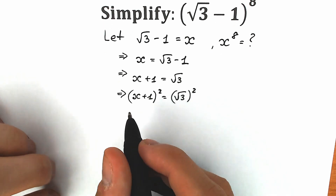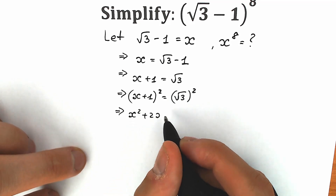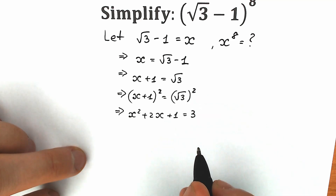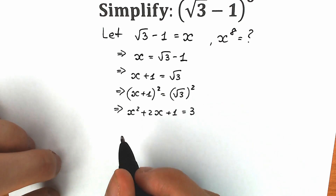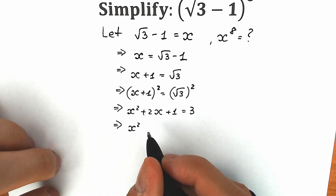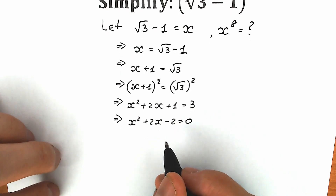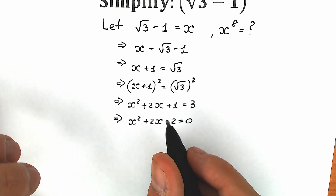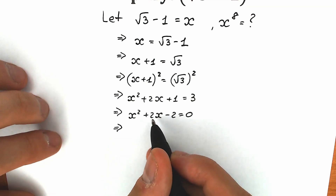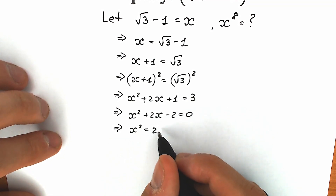On the left side we have the basic school identity: x plus 1 squared equal to x squared plus 2x plus 1. On the right side, square root of 3 squared equals 3. Bringing the 3 to the left side gives us x squared plus 2x minus 2 equal to 0. We don't need to solve this quadratic — instead let's rearrange to get x squared equal to 2 minus 2x.